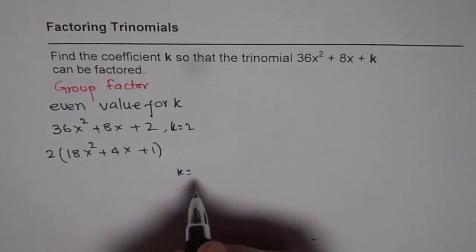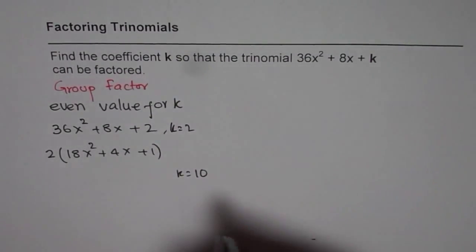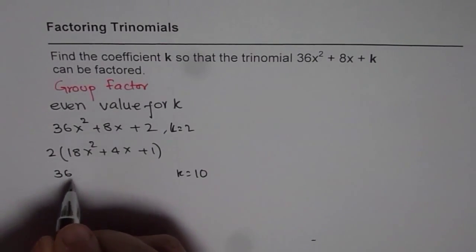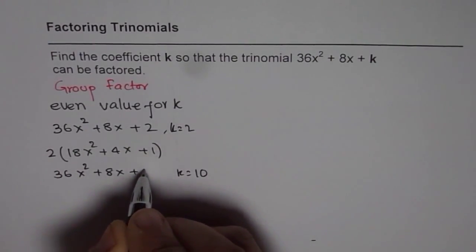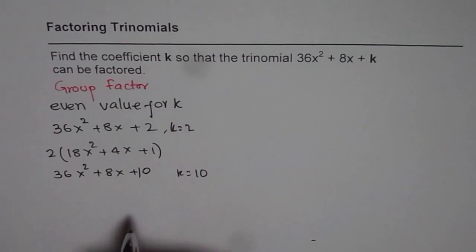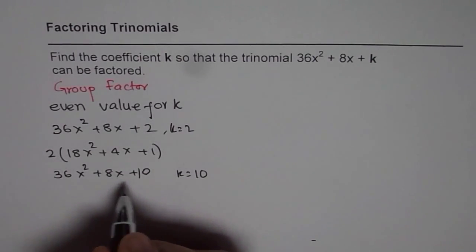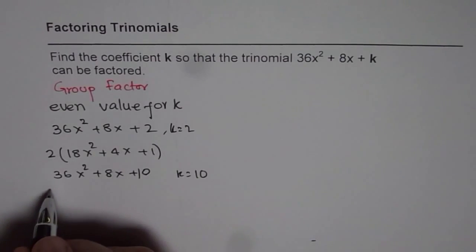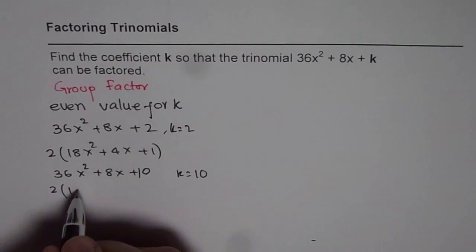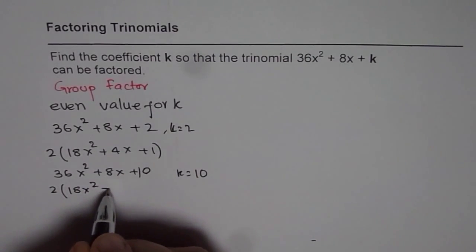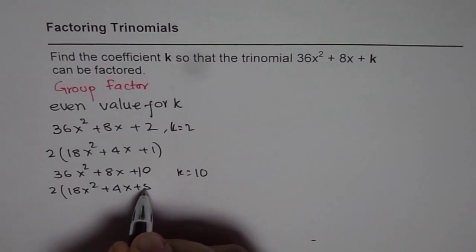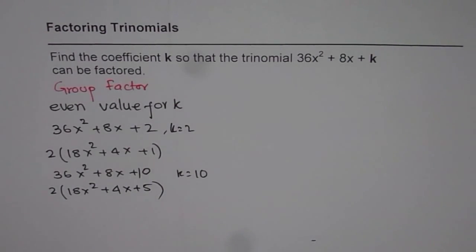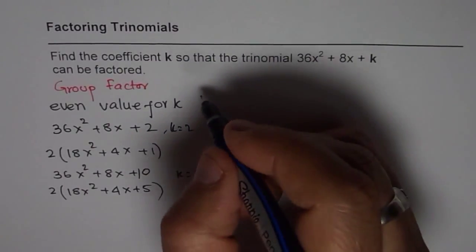You could take k as any even number. You could take k as 10. In that case it will be 36x² + 8x + 10. And then you can factor again even number. So you can factor 2 and you get almost a similar equation with constant as 5. That is one way of doing it. So that is also factoring. Remember that factoring means taking something in common.